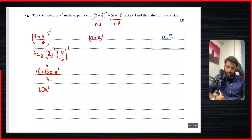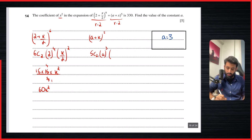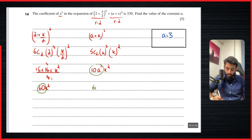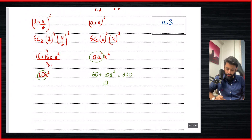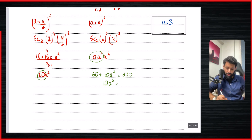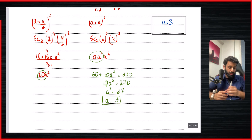For (a + x)^5 with r = 2: 5C2 · a^3 · x². 5C2 = 10, so this gives 10a³x². The coefficients of x² across both expansions are 60 and 10a³. So 60 + 10a³ = 330. Therefore 10a³ = 270, a³ = 27, and since we're taking a cube root, a = 3.